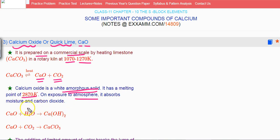If it reacts with moisture, calcium hydroxide is formed. And if it reacts with carbon dioxide, it will convert into calcium carbonate.